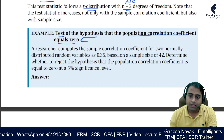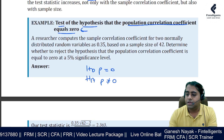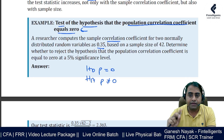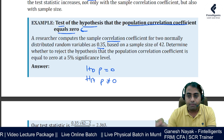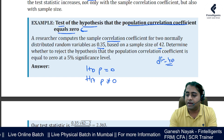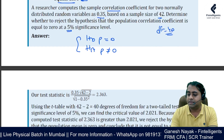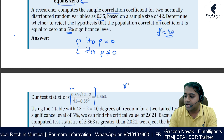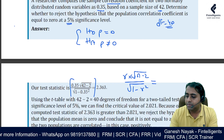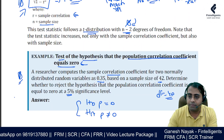The null hypothesis is that the population correlation equals zero; the alternate is that it is not equal to zero. For example, suppose we take a sample from two populations and compute a sample correlation of 0.3, with a sample size of 42. The degree of freedom is n minus 2, which gives us 40. We run the hypothesis test at five percent significance. The test statistic formula is: r multiplied by the square root of (n minus 2), divided by the square root of (1 minus r squared), giving us 2.36.